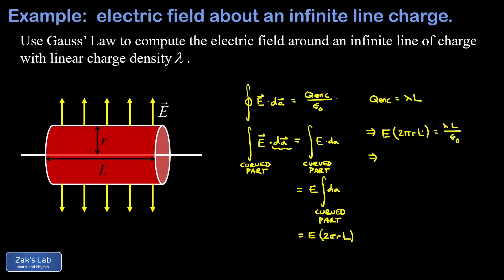We can cancel an L from both sides and divide by 2πr and we have our field magnitude at a distance of little r from our infinite line of charge. So e turns out to be lambda over 2π epsilon zero times little r and we're done.